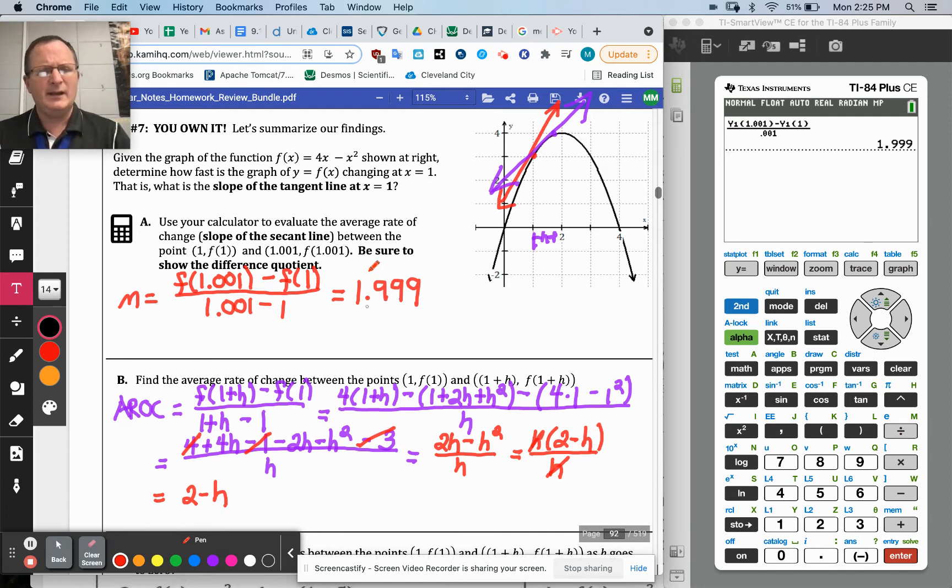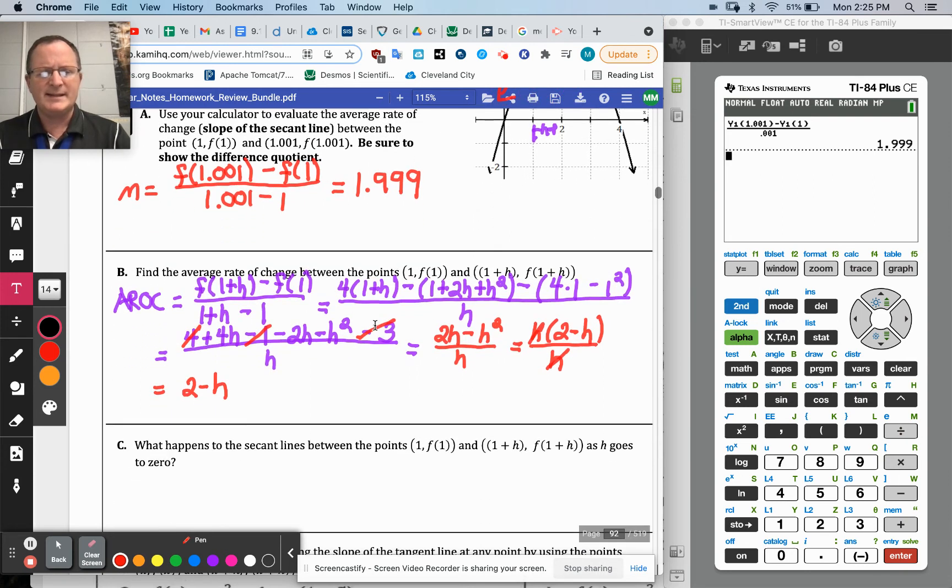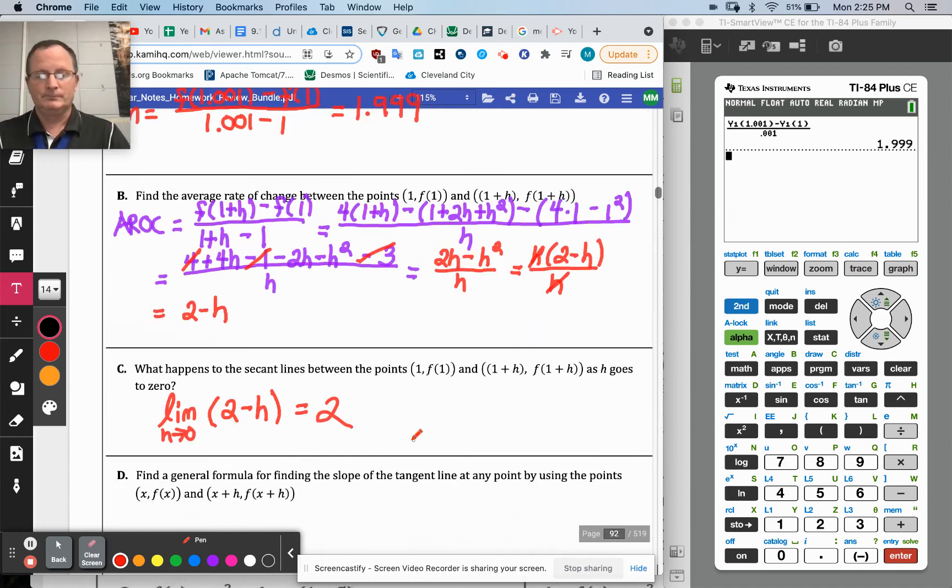But we haven't done the limit yet, right? So the limit was, what happens to the secant line between those points as h goes to 0? Well, as h goes to 0, that just sends this to 0. So it's the limit as h approaches 0 of all of that that we just did, but I'm not going to do it again. I'm just going to send h to 0. And there we are, it's 2.